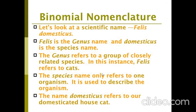Let's consider the scientific name Felis domesticus. The genus name is Felis and domesticus is the species name. Genus refers to a group of closely related species, and Felis domesticus is our domesticated house cat.